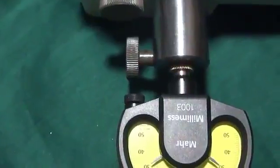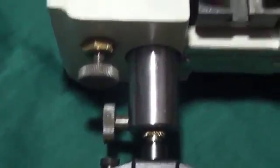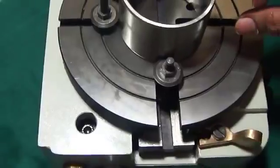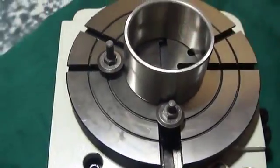Now, move the component. Move the component something like this and check the ovality out of round reading of the component.